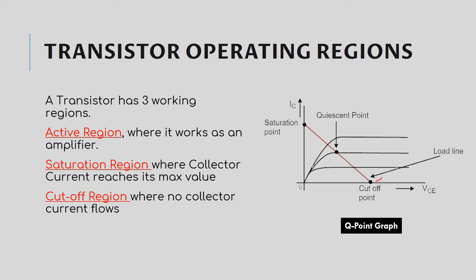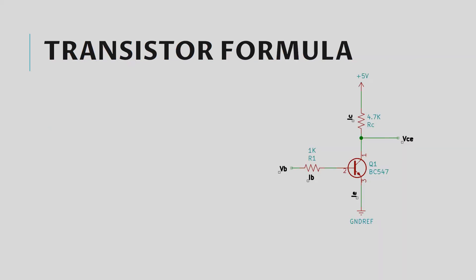Let me elaborate further by using the transistor equation. Look at a sample circuit. This is the most used transistor circuit and this is called common emitter. Here VCE is the output voltage, VB is the input voltage.